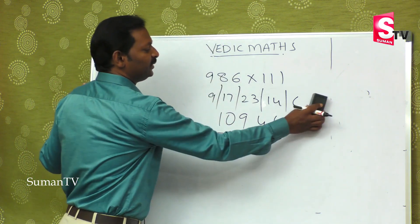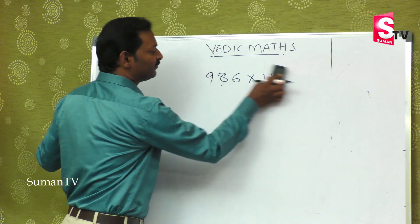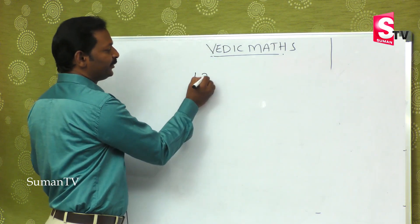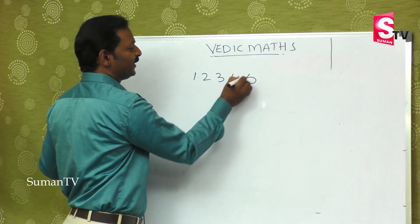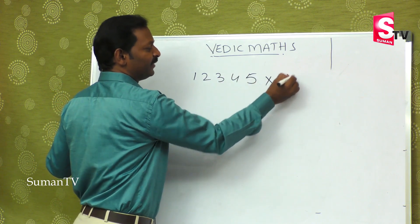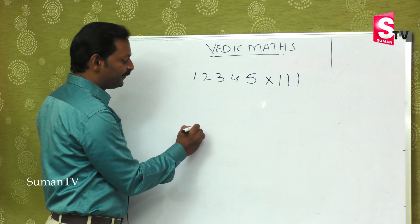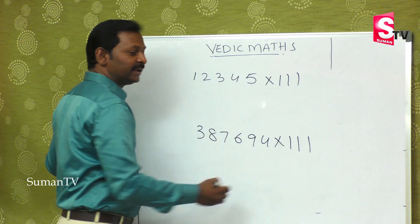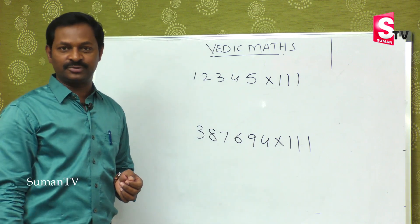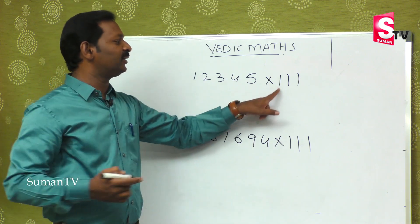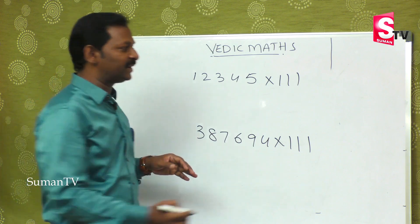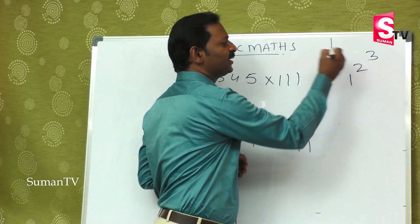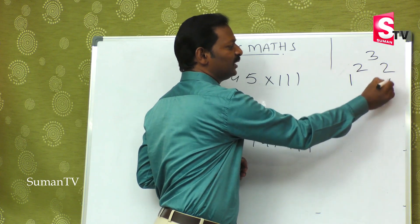Just as we did bigger numbers with 11, now we apply the same idea to a bigger number like 12345 multiplied by 111. The concept for 3 digits is: first digit alone, then 1st plus 2nd, then 1st plus 2nd plus 3rd — a sliding window of three. The last two digits are 2nd plus 3rd, then the last digit alone.